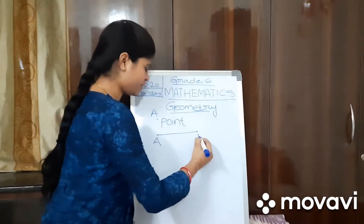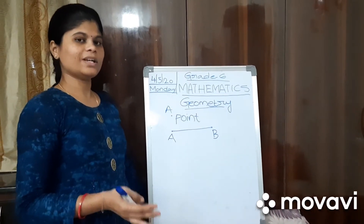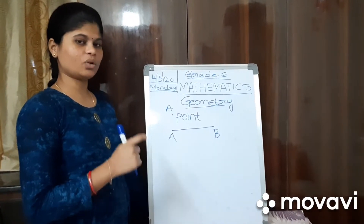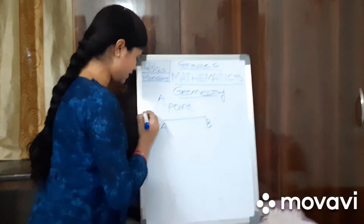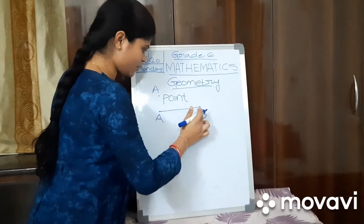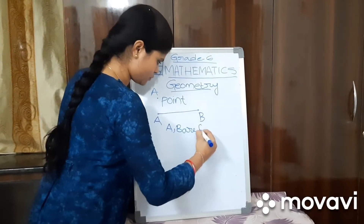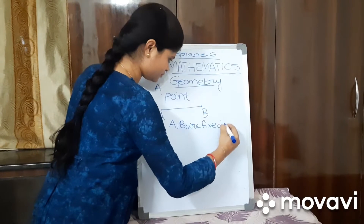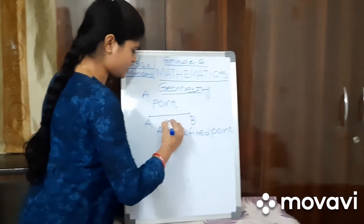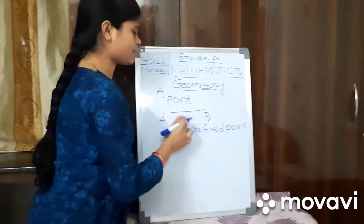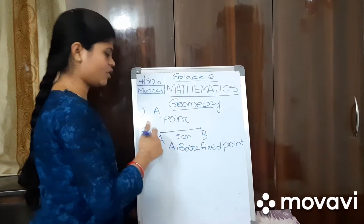Line segment starts with a point and ends with a point, and these two points are fixed points. Many of you may have confusion between line, line segment, and ray. In this video, we will get clear information about line, line segment, and ray. For a line segment, both A and B are fixed points.